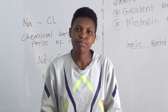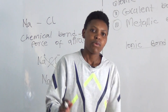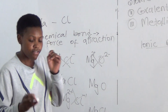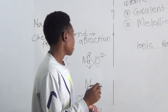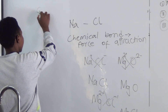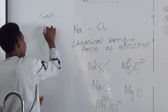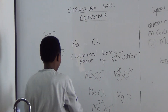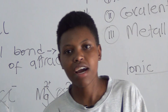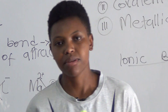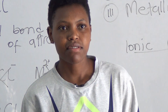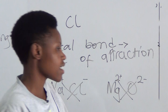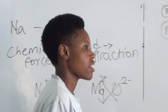Bonding occurs through the exchange of valence electrons. When an element loses or gains an electron, it gains its stability. For an element to be stable, it can gain an electron, lose an electron, or share one. For instance, sodium gains stability by losing an electron, chlorine gains stability by gaining an electron, and oxygen gains electrons to be stable. In ionic bonding, one element will gain an electron and the other will lose one.